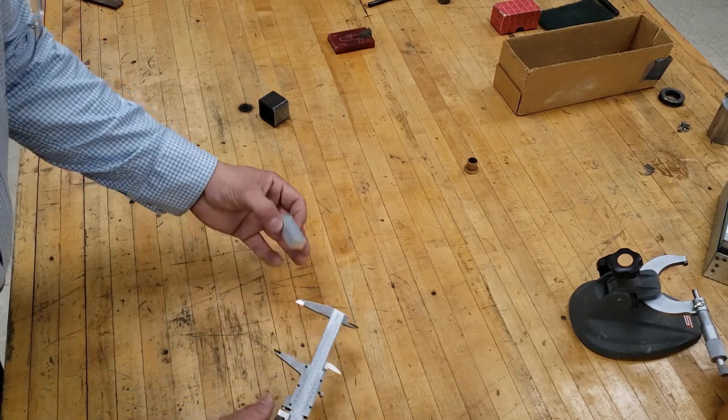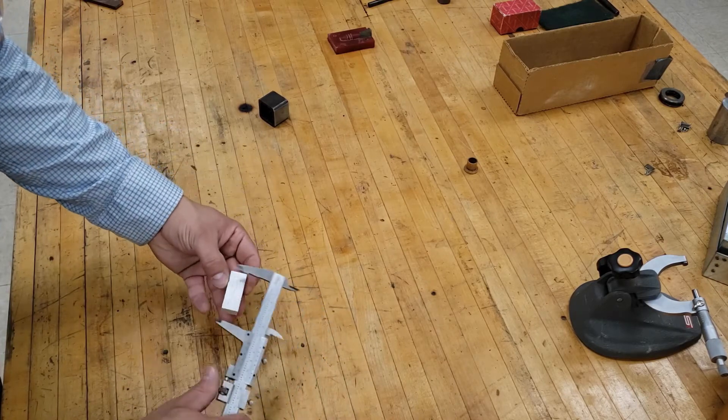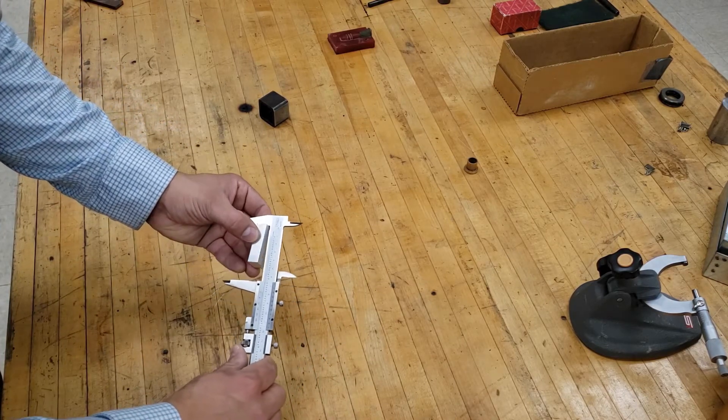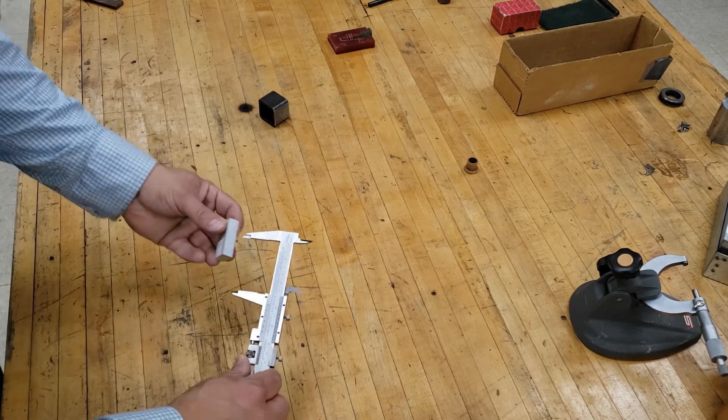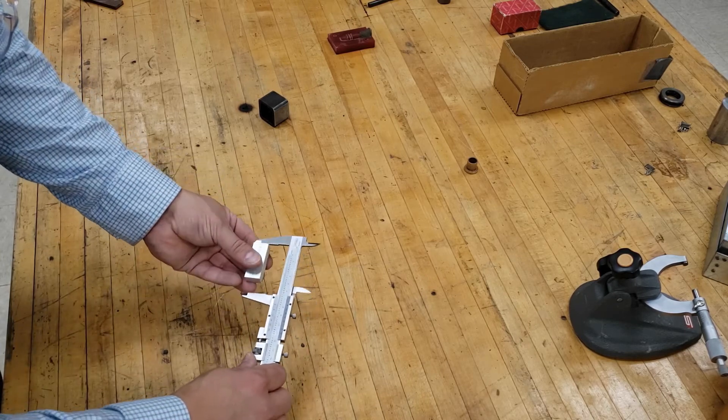Then we will measure the length of this aluminum bar. Make sure that you are not too far in because the jaws are a bit recessed and will give you an incorrect reading.